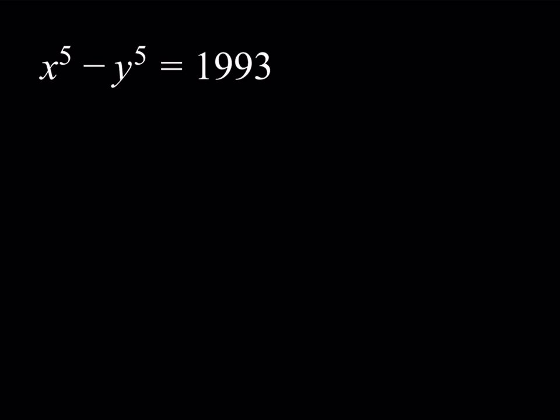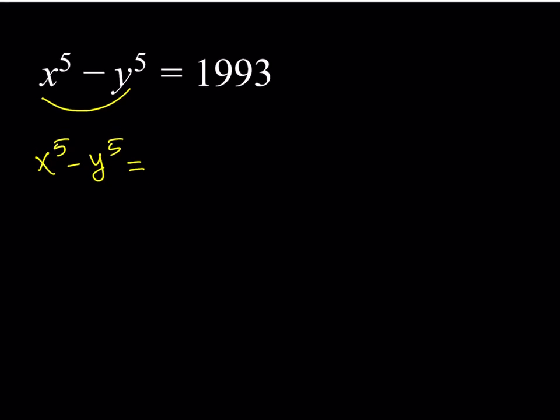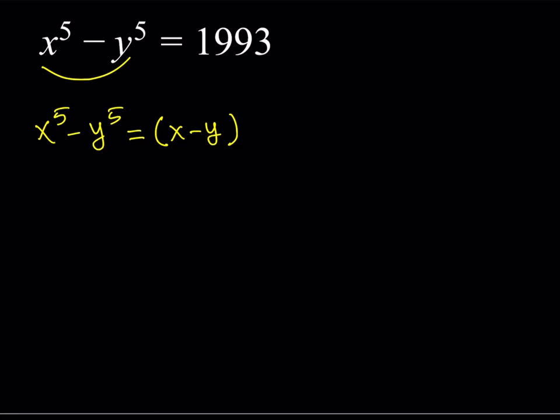This one is actually factorable, so we can go ahead and factor x to the fifth minus y to the fifth. As you know, if n is an integer, x to the nth minus y to the nth is always factorable. If it's odd, and if it's a plus sign, it's also factorable. Notice that it's divisible by x minus y.